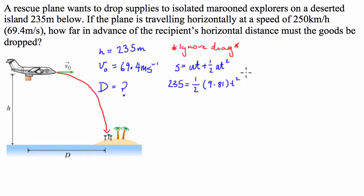So what we're going to do is rearrange this equation by moving the half across, dividing by 9.81 and square rooting, so we're going to end up with t equals the square root of 235 divided by ½ of 9.81. And the time is going to be 6.921 seconds.